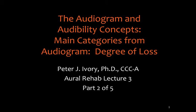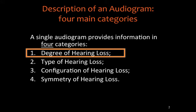This is Part 2 of Lecture 3 in the Oral Rehab class, continuing to talk about the audiogram. In Part 2 and Part 3, we'll talk about the main categories of information available on an audiogram. In this screencast, we're going to feature a discussion of degree of hearing loss. In Part 3, we'll pick up and discuss the remaining categories: type, configuration, and symmetry.